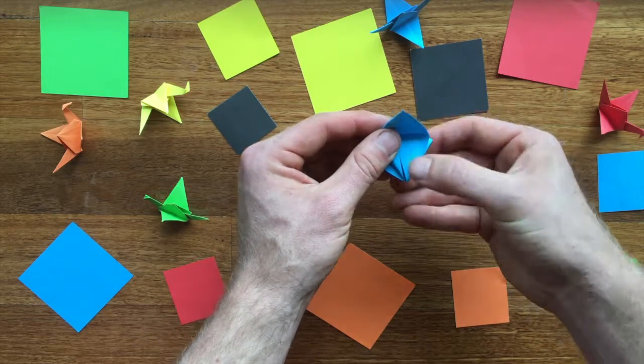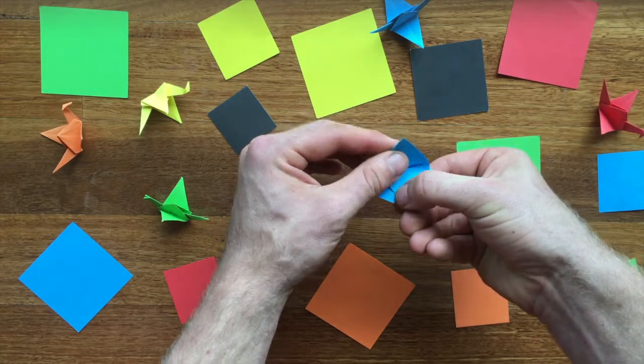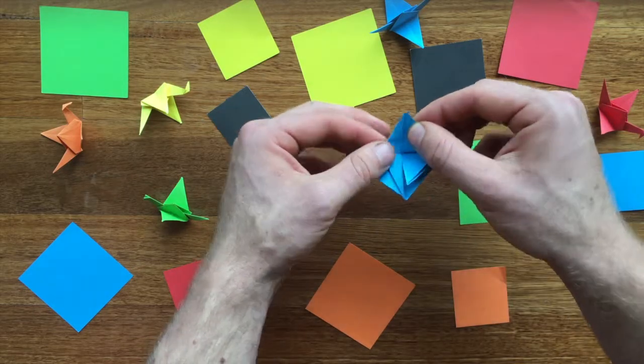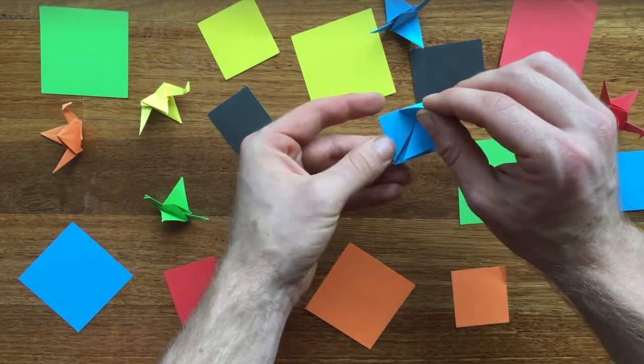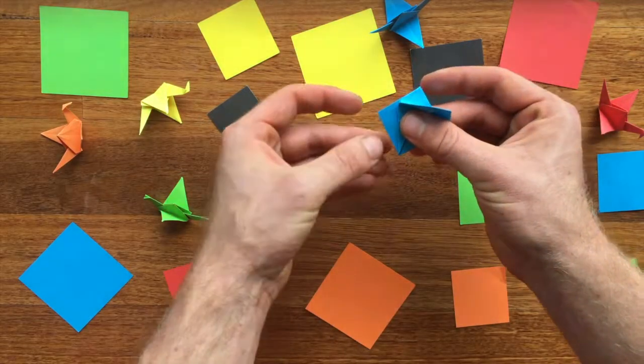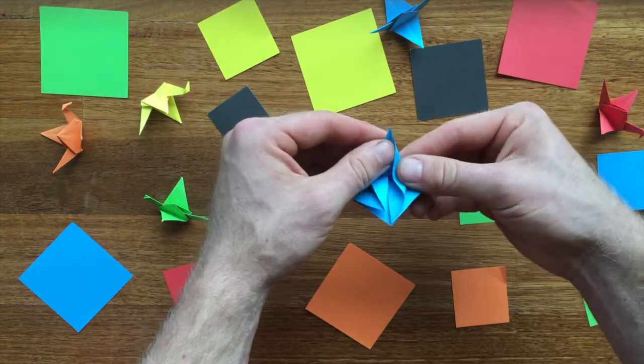And the same down the bottom. Again being as exact as possible with each fold will ensure a more symmetrical and beautiful crane towards the end. And then repeating that on the other side.